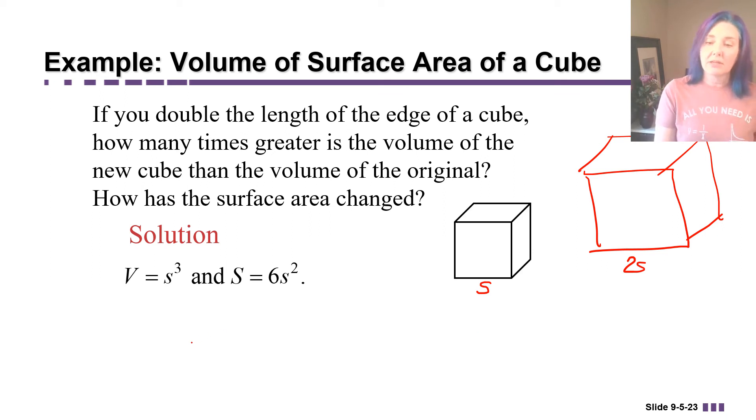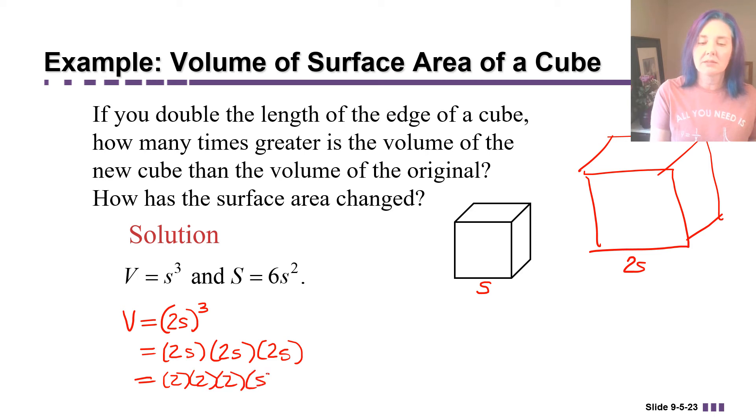So what would its volume be? Well, its volume would be whatever the length of the side is to the third power. What does that mean? That means 2s times 2s times 2s. So that would be, the commutative property of multiplication tells us we can do 2 times 2 times 2 times s times s times s. So that's going to be 2 times 2 times 2 is 8 s to the third power. Notice that that's 8 times as big as the volume of this one. This one had a volume of s cubed. This one has a volume of 8 s cubed. So it's 8 times as big. So the answer to the first part is 8 times.